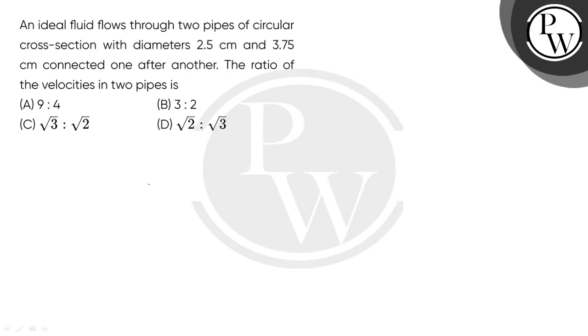Hello, let's read the question. An ideal fluid flows through two pipes of circular cross-section with diameters 2.5 cm and 3.75 cm connected one after another. The ratio of the velocities in the two pipes.